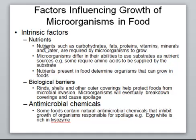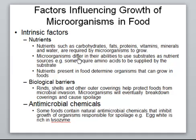Another intrinsic factor is nutrients. The richer a food is in vitamins, amino acids, and fats, the more it will support microbial growth. For example, meat purchased from the supermarket will go bad very quickly at room temperature because it contains protein, fat, carbohydrates, vitamins, and minerals. Bacteria require the same nutrients from A to Z for their growth, just as we do.